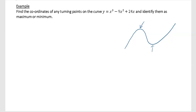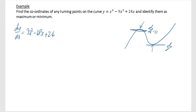The first thing you want to do is find dy/dx. Differentiating gives 3x squared minus 18x plus 24. At a maximum or minimum, the gradient is equal to zero, so we set dy/dx equal to zero. That gives us 0 equals 3x squared minus 18x plus 24. Every coefficient — 3, 18, and 24 — is divisible by 3.